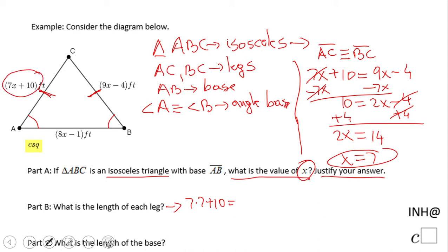That'll be 49 plus 10 equals 59. Each leg is 59. AC is 59, BC is 59, and that is Part B.